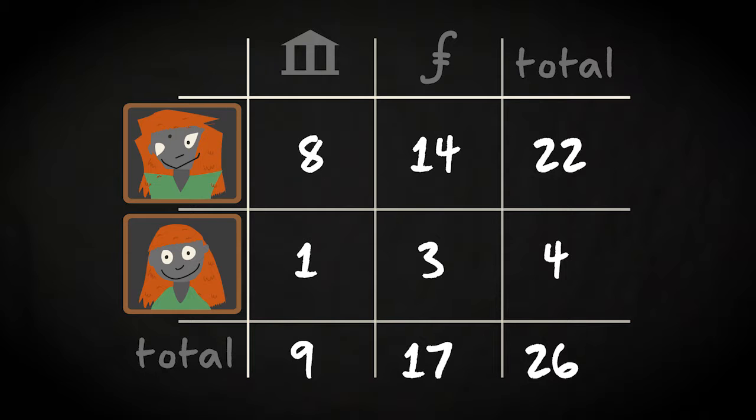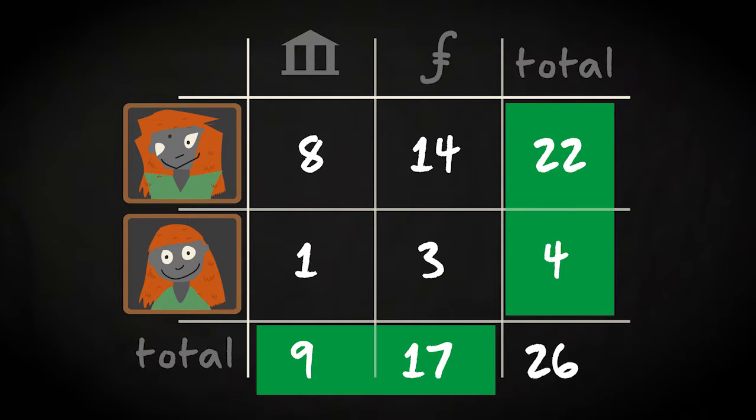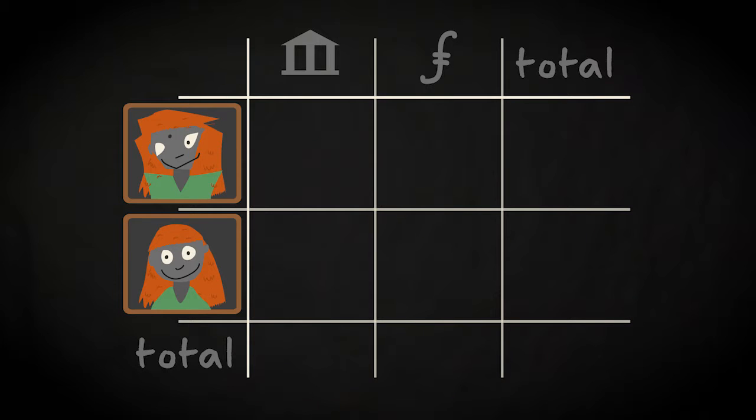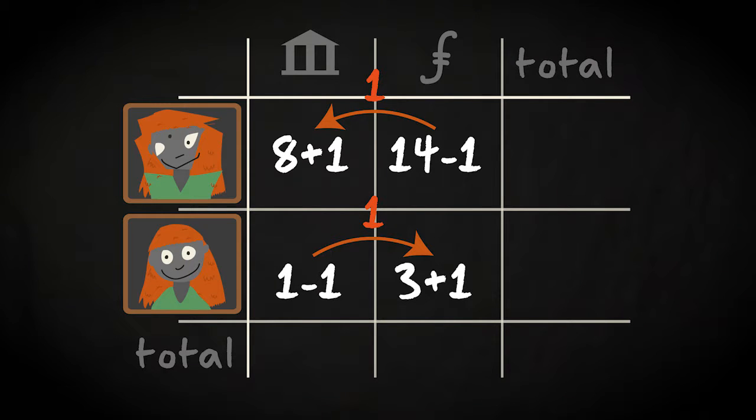Now, the idea of the test is that, given the marginal distributions, there are a limited number of arrangements possible in the table. For example, instead of a count of 8 and 14 in the first row, we could also have a count of 9 and 13, while in the second row the counts would then change to 0 and 4, to keep the marginal frequencies the same.